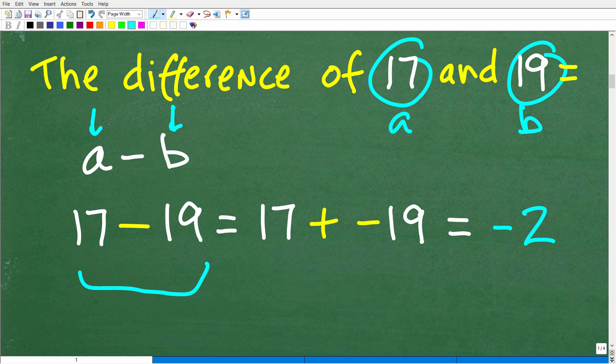So in math, what I can do is I can change a subtraction problem to an addition problem. And the way I can do that is change this subtraction operator into an addition operator, but scoot that negative sign over to the number to the right. So 17 minus 19 is the same thing as 17 plus negative 19.